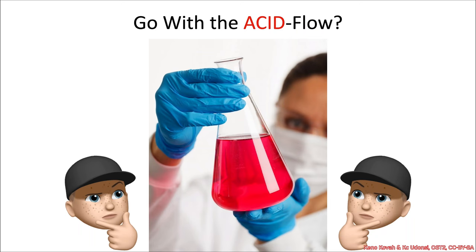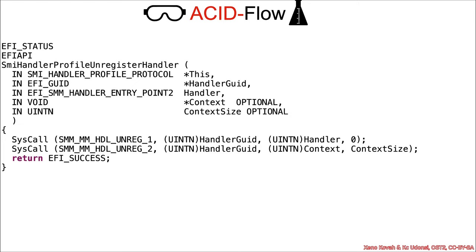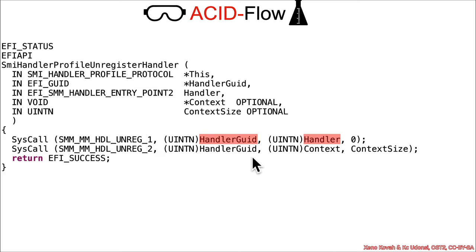We're off to the races. It never hurts to go with the ACID flow, so let's keep track of the ACID and figure out where there are race condition opportunities. The first thing is that I didn't exactly tell you what ACID was, but I did say that you should assume that user space is fully compromised. System calls are a call from user space to kernel space, and this function was user space code. Therefore, you should assume that all of the inputs to a system call are fully attacker-controlled.